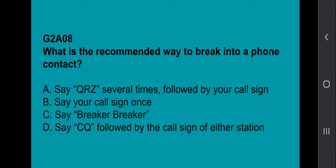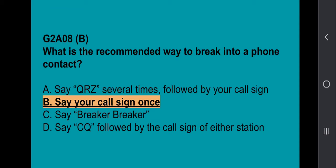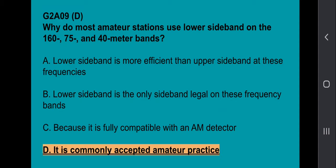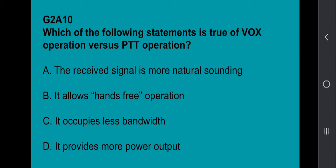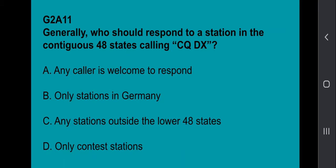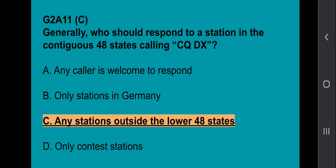G2A08: What is the recommended way to break into a phone contact? Say your call sign once. G2A09: Why do most amateur stations use lower sideband on 160, 75, and 40 meter bands? It's commonly accepted amateur practice. G2A10: Which of the following statements is true of VOX operation versus PTT operation? It allows hands-free operation. G2A11: Generally, who should respond to a station in the continuous 48 states calling CQ DX? Any stations outside the lower 48 states.